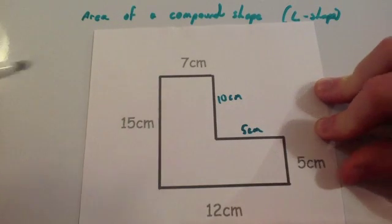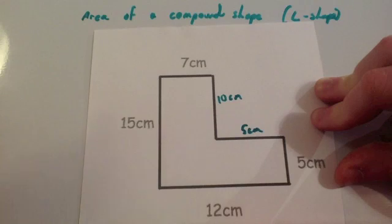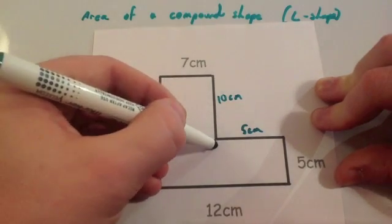Okay, now what we're going to do is split it. And again it doesn't matter which way you split it, as long as you make sure you multiply the right numbers. This time we're going to split the thing vertically.